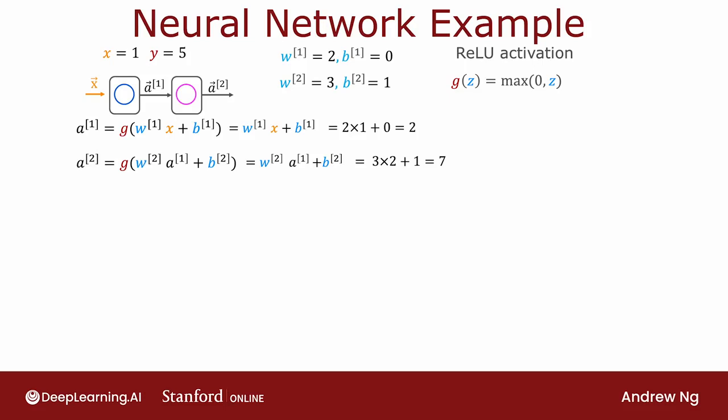Finally, we'll use the squared error cost function. So j of wb is 1 half a2 minus y squared, which is 1 half 7 minus 5 squared, which is 1 half of 2 squared, which is just equal to 2.